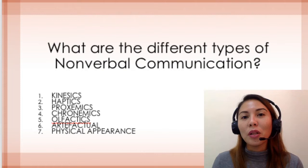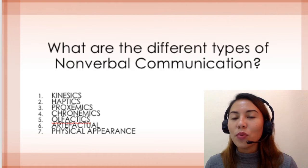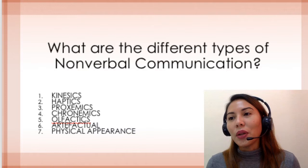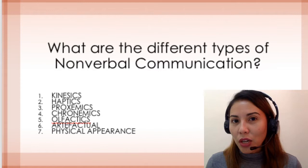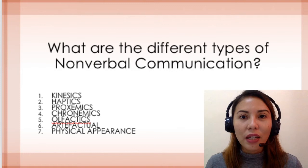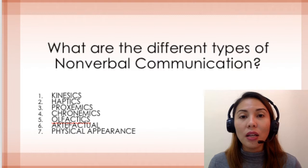So what are the different types of nonverbal communication? We have seven of them: kinesics, referring to the language of the body; haptics, the language of touch; proxemics, the language of space; chronemics, the language of time; olfactics, the language of smell; artifactual, the language of objects; and of course, physical appearance — how you package yourself physically, including your clothes and so on.